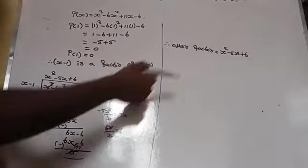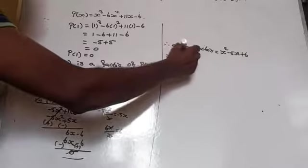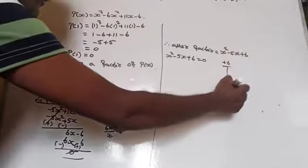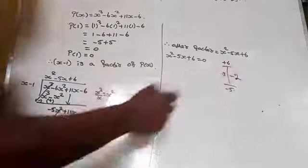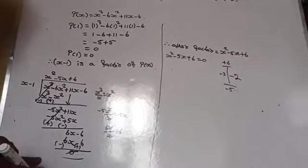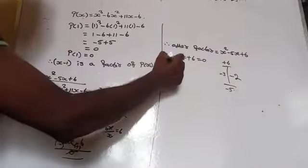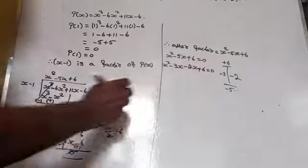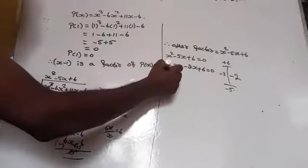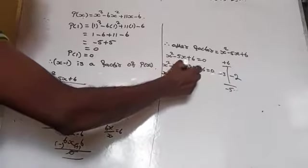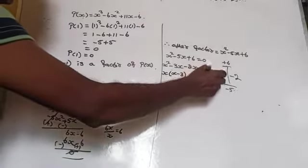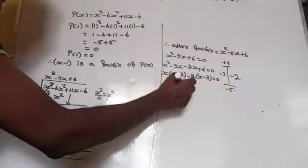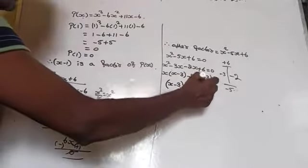The other factor is x² - 5x + 6. Now factorize this quadratic polynomial by splitting the middle term. The product of the two integers is +6 and the sum is -5, so they are -3 and -2. Split: x² - 3x - 2x + 6 = 0. Take x common from first two terms: x(x - 3) - 2(x - 3) = 0.